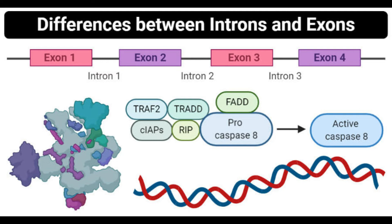Alternative splicing allows exons to be arranged in different sequences, where different configurations result in different proteins. A process similar to alternative splicing is exon shuffling, where exons on sister chromosomes are exchanged during recombination. Alternative splicing occurs commonly in a human gene that codes for a transmembrane protein involved in the regulation of potassium entry in the hair cell. This gene consists of 35 exons which can combine in different ways to form over 500 mRNA variants by the reshuffling of about 1 to 8 exons.